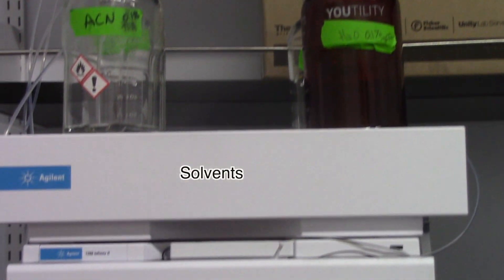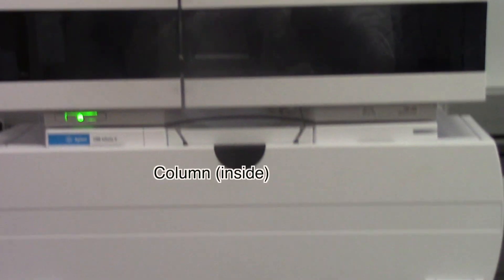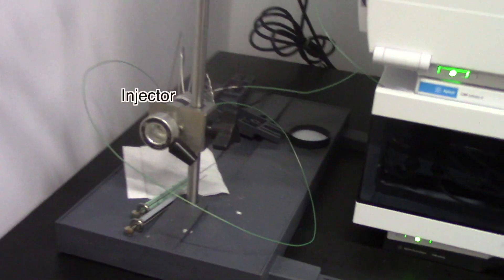Key parts of the HPLC are the solvents, the fraction collector, the detector, the column, the pump, and the injector.